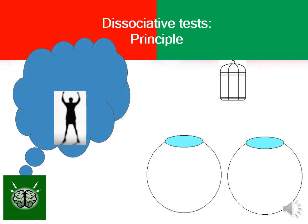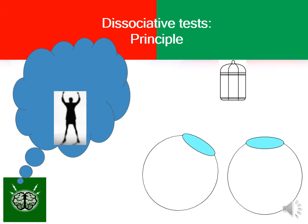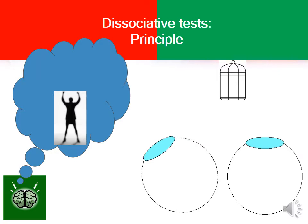Dissociative tests are based on that principle. If the eye is straight or orthophoric, the image of the target will fall on the fovea, and the brain will correctly interpret it as if it is present in front of it. If the left eye is exotropic, the image will fall on the nasal retina, and the brain will think that the object is in the temporal field. If the left eye is esotropic, the image will fall on the temporal retina, and the brain will think that the object is in the nasal field.